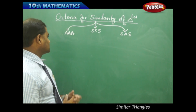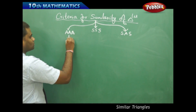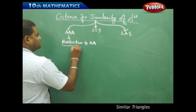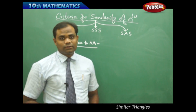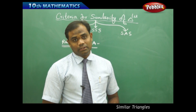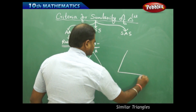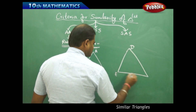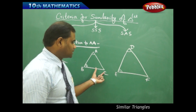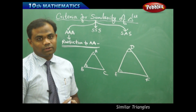It is very important to note that AAA similarity can be reduced to AA similarity, because if two corresponding angles are equal in two triangles, then obviously the third angle will also be equal. For example, say two triangles ABC and DEF in which angle A equals angle D and angle B equals angle E, but angle C is not assumed equal to angle F. Let's see if, based on these two angles, the third angle is also the same.